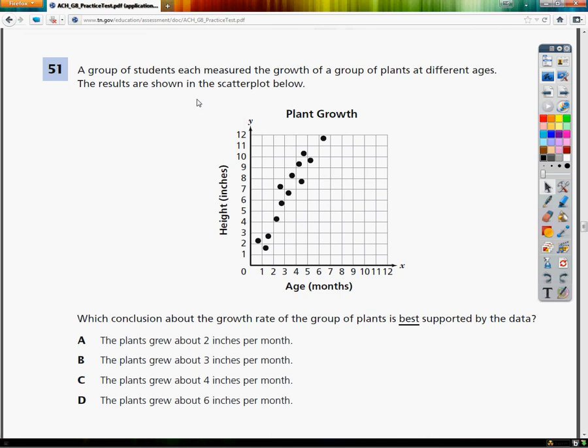This is the TCAP 8th grade math practice test. This is question number 51. A group of students each measured the growth of a group of plants at different ages. The results are shown in the scatter plot below.